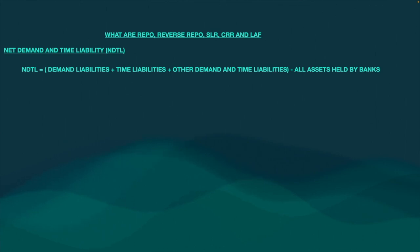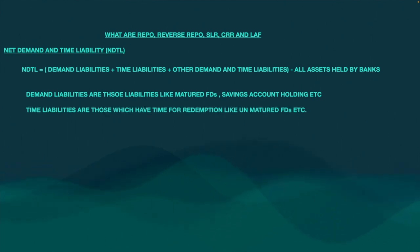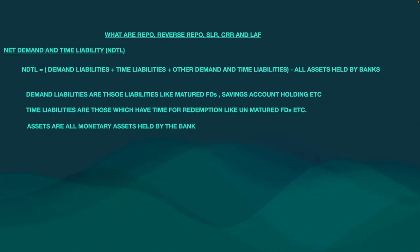Minus all assets held by the bank. Demand liabilities are those liabilities like matured FDs, savings account holdings — even savings account holdings you cannot touch. They are all demand liabilities because the person can come and take the money any day. Whereas time liabilities are unmatured FDs which are there with the bank — you have to pay back that money after a period of time. Assets are nothing but all the monetary assets held by the bank at any particular point of time.